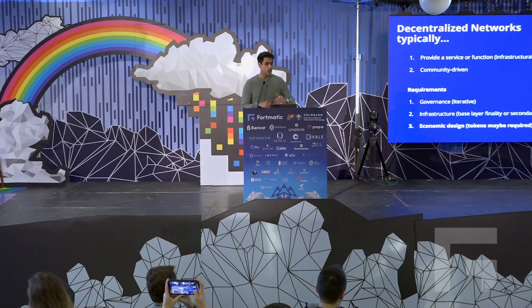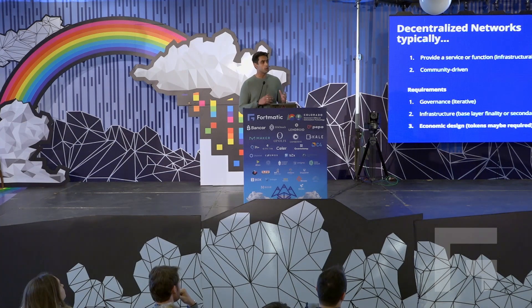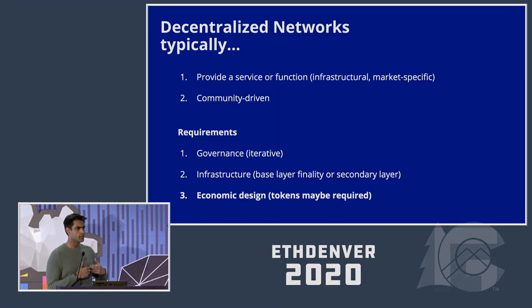When looking at requirements, we've got to figure out a few set points. Firstly, there's governance, which is an iterative process — a good governance model allows you to iterate on existing protocol standards and rules as you move forward. The second is infrastructure: there needs to be some kind of base layer finality or node infrastructure being run, which helps sustain your network economically and technically. And finally, there's economic design, which I'm going to dig into. I note 'tokens may be required' because you don't need a token for everything.